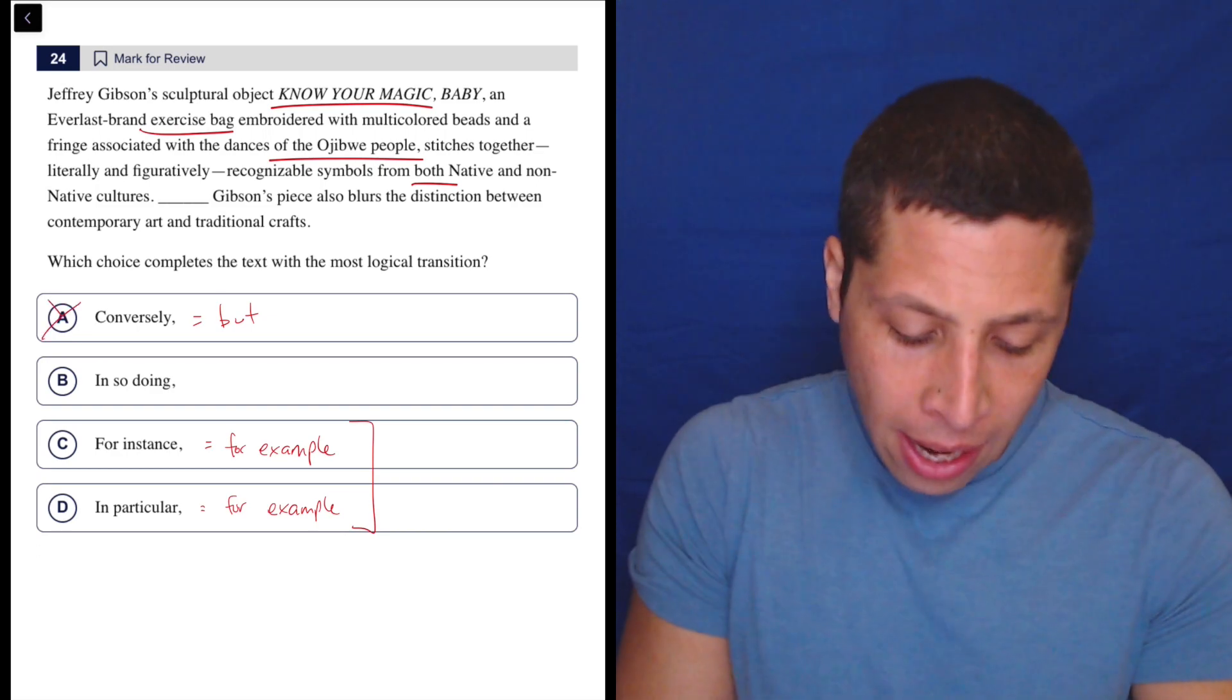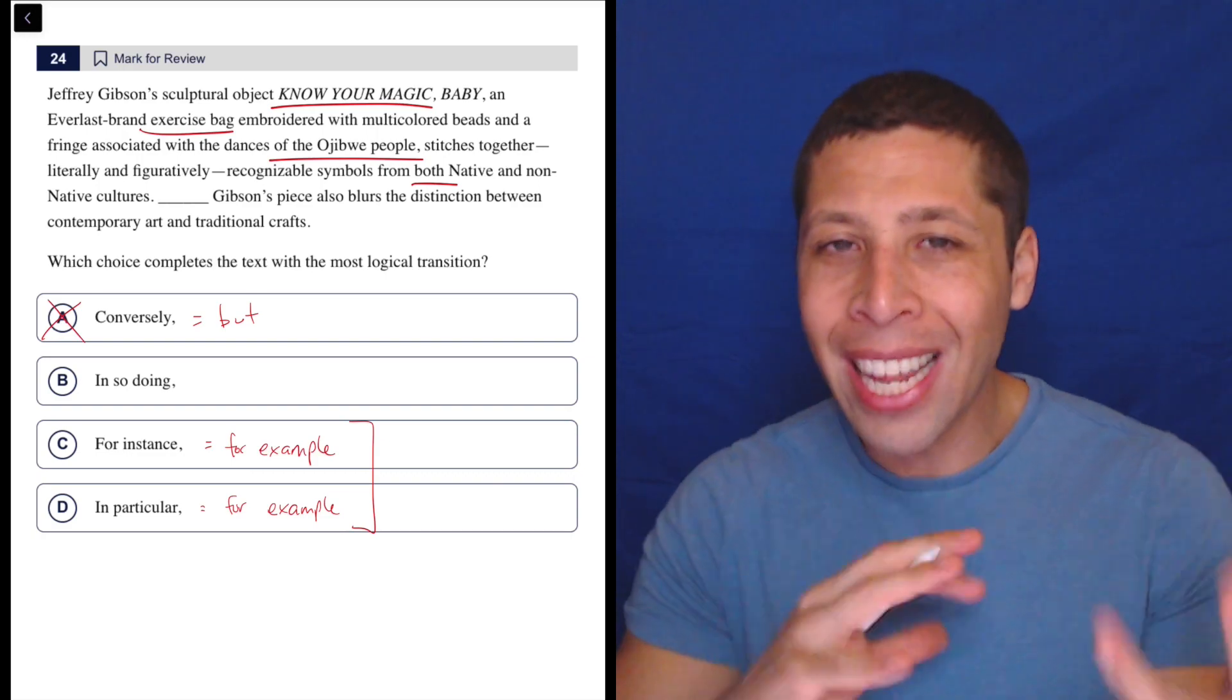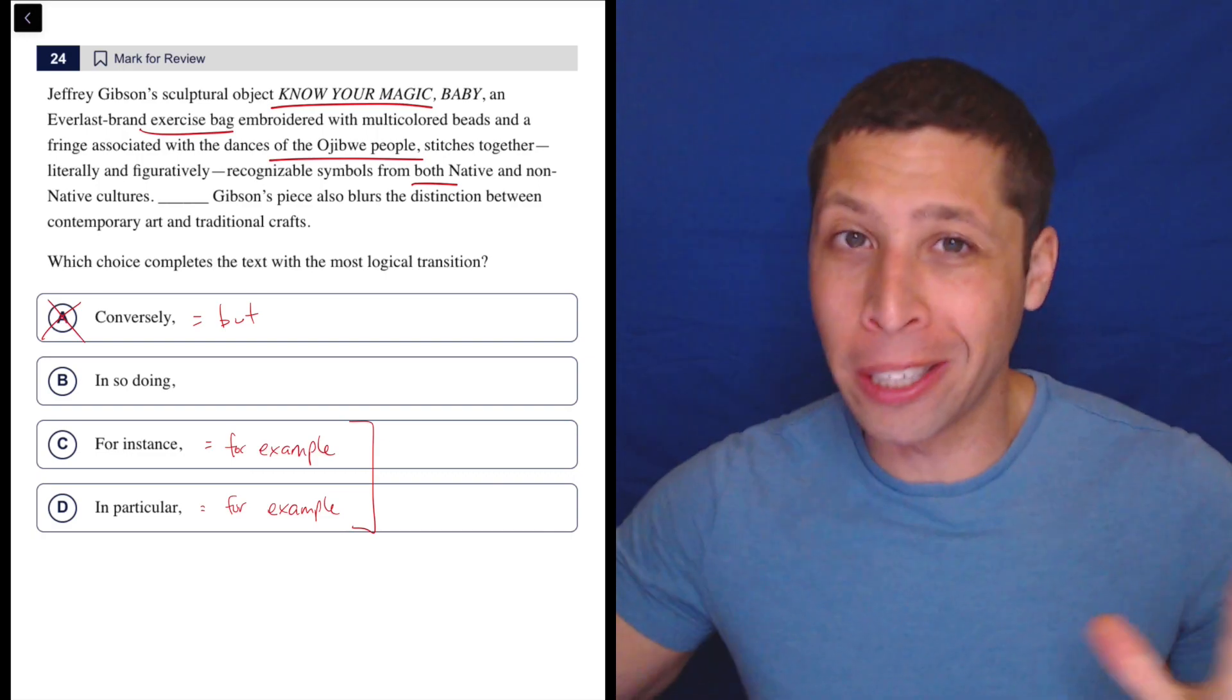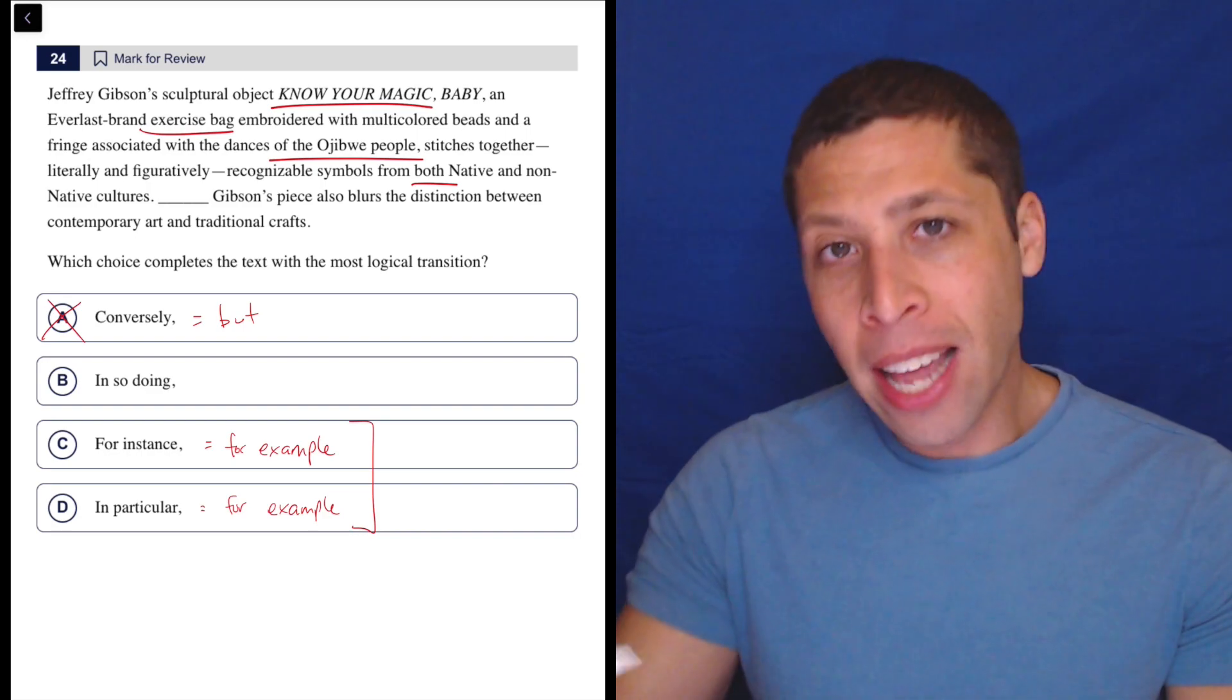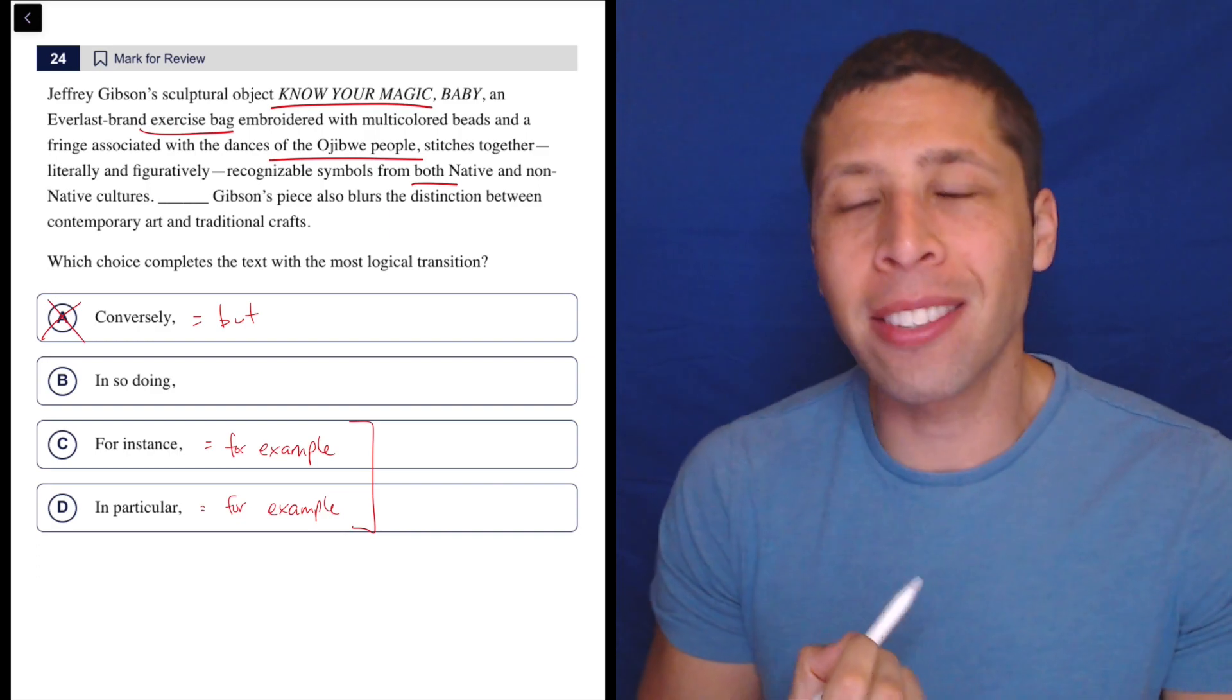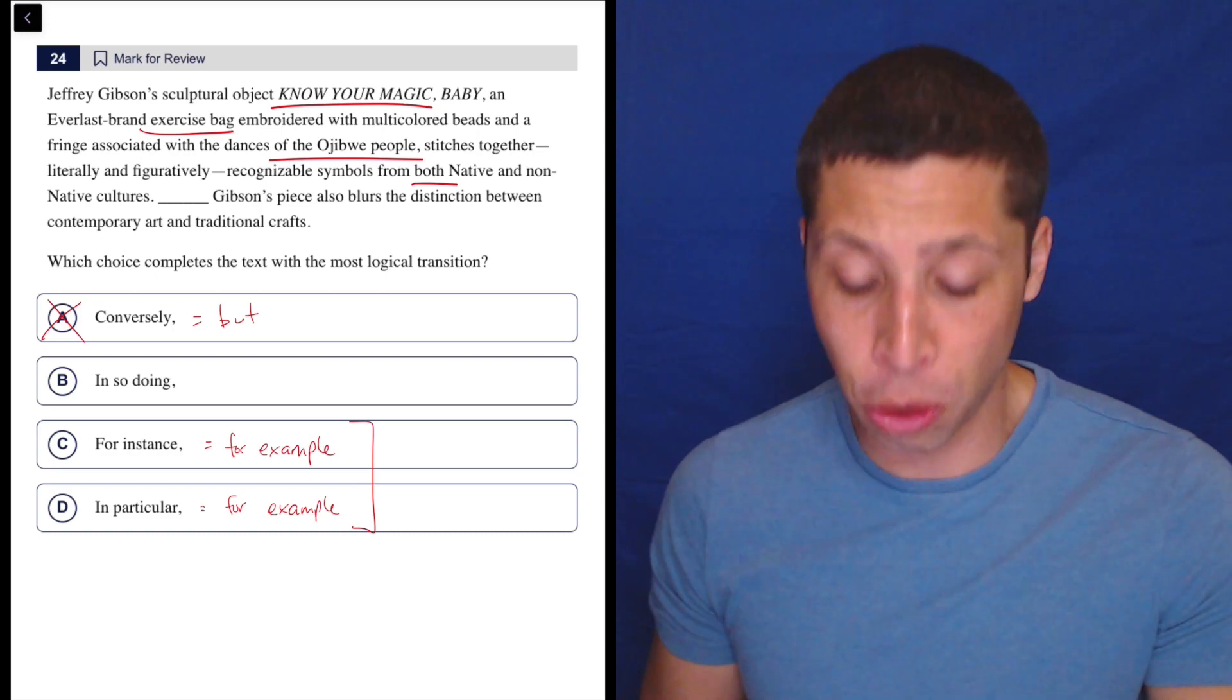So it doesn't seem like a conversely situation. There's no contrast here, right? The blending is happening in both things. We're not saying he's blending one thing but being really, I don't know, rigid about something else. So that doesn't really make sense. And then again, I don't think it's going to be C and D because they mean the same thing.